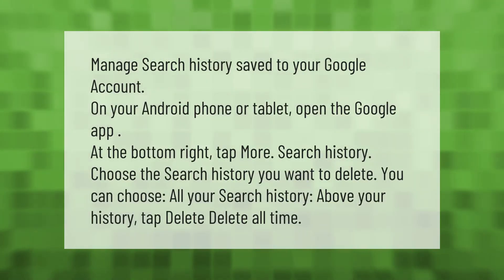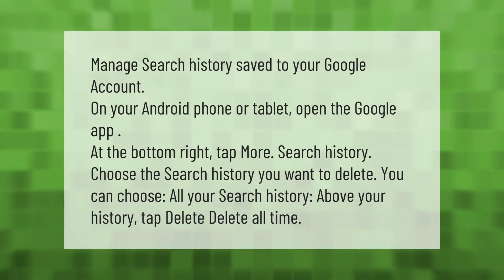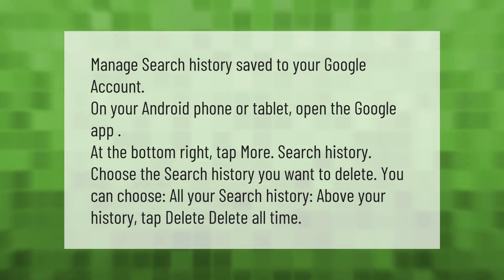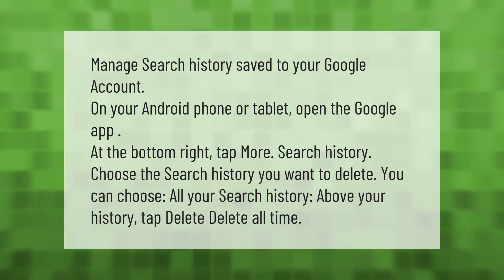To manage search history saved to your Google account on your Android phone or tablet: open the Google app, tap More at the bottom right, then tap Search History. Choose the search history you want to delete. You can choose all your search history — above your history, tap Delete, then Delete all time.